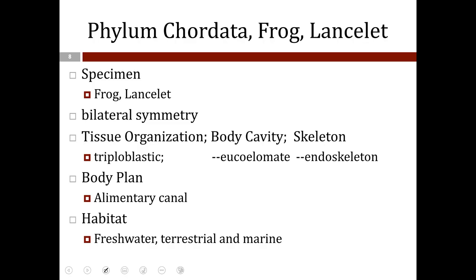Moving on to Phylum Chordata, which includes things such as the lancelet, the frog, and even Homo sapiens — humans. Chordates exhibit bilateral symmetry, are triploblastic eucoelomates with an endoskeleton, and have a complete digestive system with two openings: a mouth and an anus. They live all over the world, from the marine environment to freshwater and even the terrestrial environment.